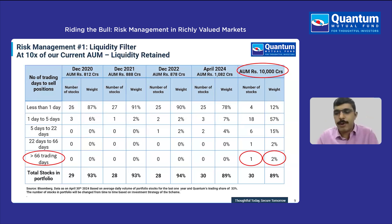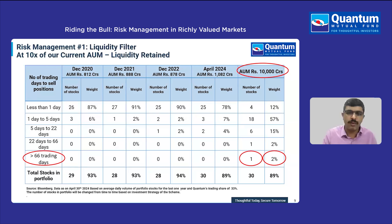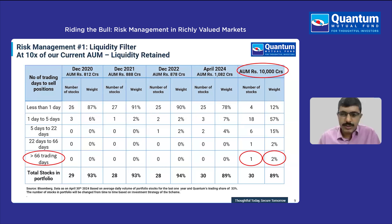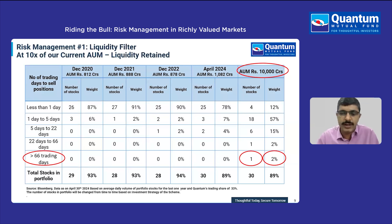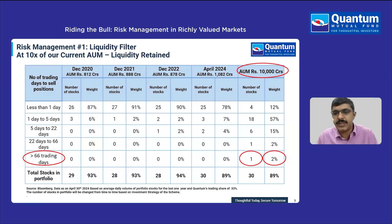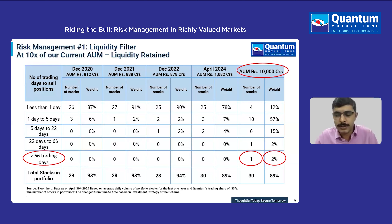The second important outcome of having a liquidity filter is that the current portfolio characteristics you see at a thousand crore AUM can be scaled up even if AUM grows higher. For any stock with that one million dollar trading volume, our estimate is that it can generally be bought into or sold out of within a period of 66 trading days, provided those liquidity characteristics are maintained through the holding period.